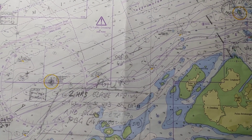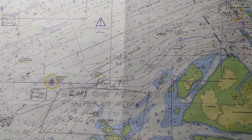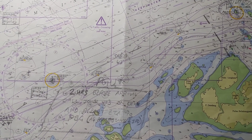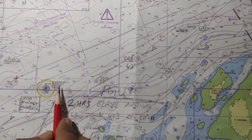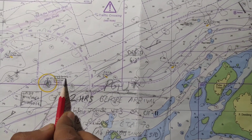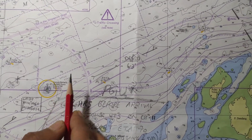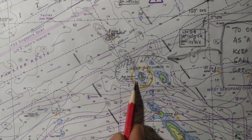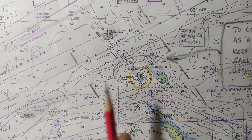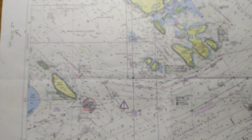Good evening. Today we will be discussing Raycons, also called radio beacons. The two Raycons we will be discussing are Buffalo Rock, which is Raycon K, and Batu Barhandi, which is Raycon B. These are coming up on chart number 4041.